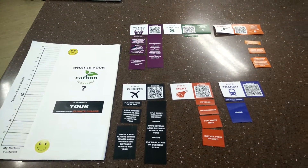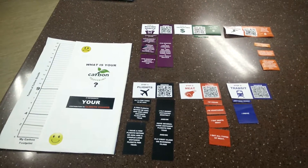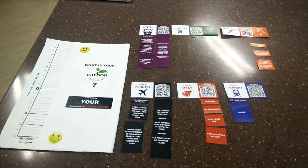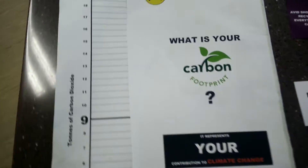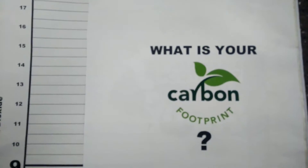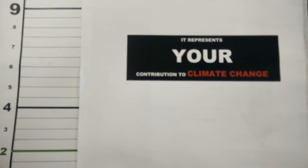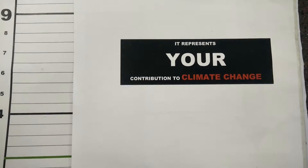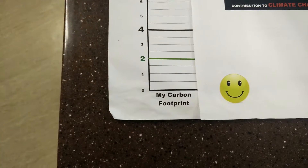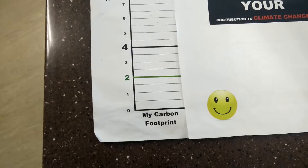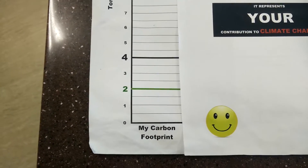I'm going to show you how this carbon footprint activity looks and how it's used. Here's basically the setup that would look like on a table. What you would do is invite somebody to see if they want to know what their carbon footprint is, and give them a brief definition of the fact that it represents your contribution to climate change — how your choices contribute to carbon in the atmosphere, a greenhouse gas, and thus climate change.